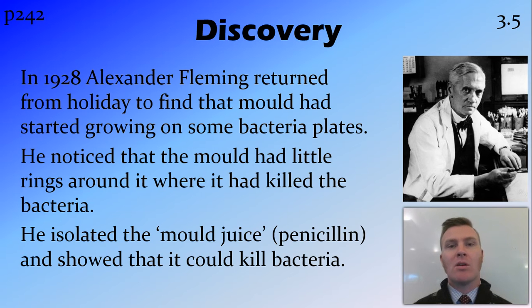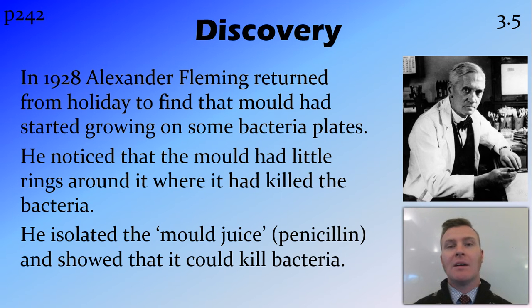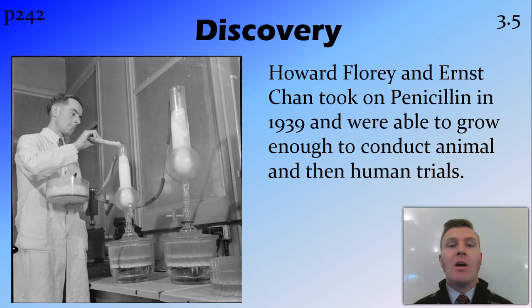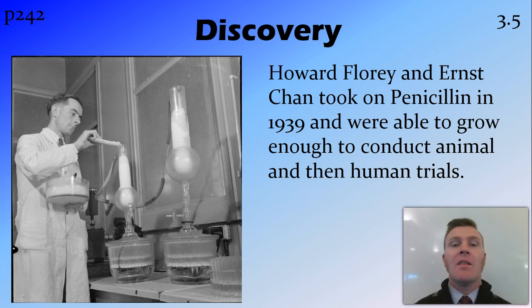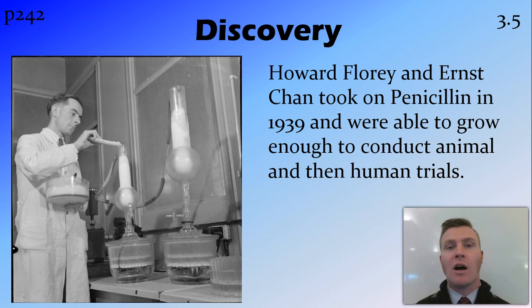The problem with this mould juice was it was really hard to grow, didn't store well, and was really hard to work with in the lab. So after discovering it, Fleming basically put it on ice and moved on. It wasn't until 1939 when Howard Florey and Ernest Chain started working with penicillin that they were able to find a way to grow it in quantities where it could actually be harvested and used for animal and then human trials.